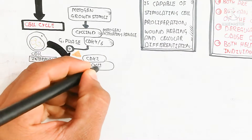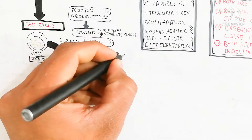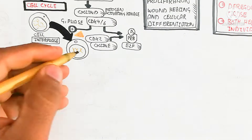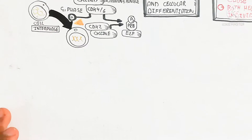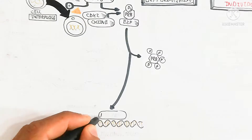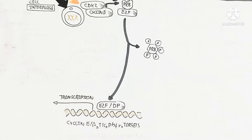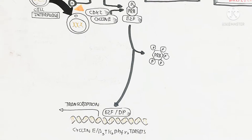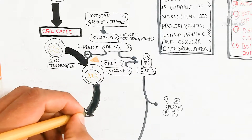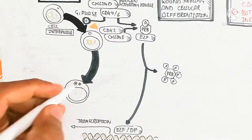Cyclin-dependent kinase 2 and cyclin E also bind to trigger the G1 phase. The retinoblastoma protein binds with the E2F factor, making E2F inactive. However, phosphorylation of the retinoblastoma protein causes it to separate from E2F, allowing E2F to bind with DNA and transcribe more cyclins and cyclin-dependent kinases, maintaining progression of the cell cycle.